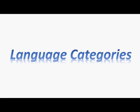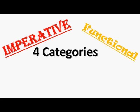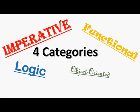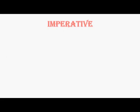Hello guys, my name is John Abel Dezza and I am here to discuss all about language categories. There are four categories of languages: imperative, functional, logic, and object-oriented. First we will discuss all about imperative languages.